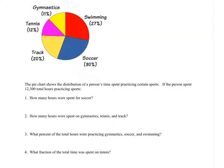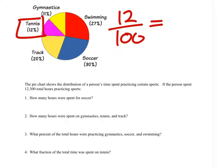What fraction of the total time was spent on tennis? Well, tennis was 12% of the time, so that's 12% out of the 100%. What is this as a fraction reduced is what really we're looking for. So let's divide both of these by four and see what we have, because both of them are divisible by four. And we have 3 over 25. That's good enough.